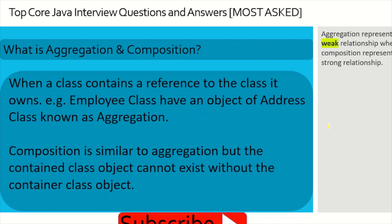What is the difference between aggregation and composition? Aggregation is when a class contains a reference to another class it owns — for example, an Employee class having an Address object. Composition is similar but the contained object cannot exist without the container object. Aggregation represents a weak relationship, while composition represents a strong relationship between two entities.